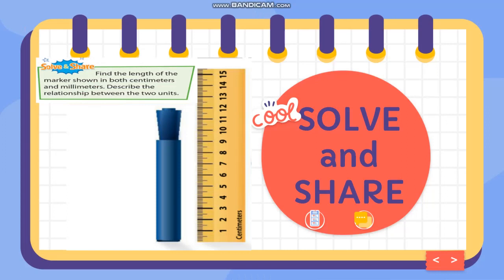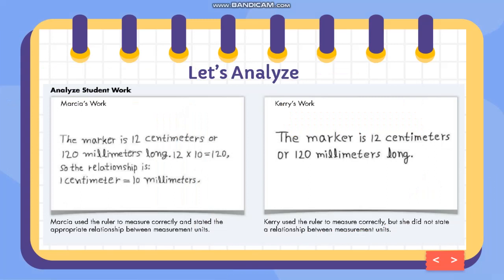Let's analyze this problem: find the length of the marker shown in both centimeters and millimeters, and describe the relationship between the two units. As you can see, this measurement is in centimeters and this one is in millimeters. Based on Marcia's work, she used the ruler to measure correctly and stated the appropriate relationship — the marker is 12 centimeters, equivalent to 120 millimeters, because 12 multiplied by 10 equals 120. So the relationship is: 1 centimeter is equivalent to 10 millimeters.